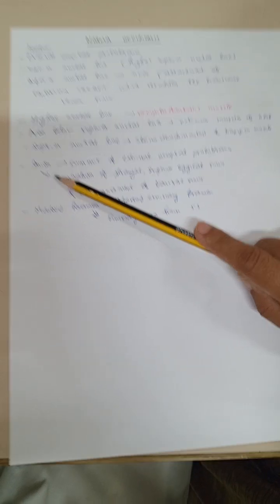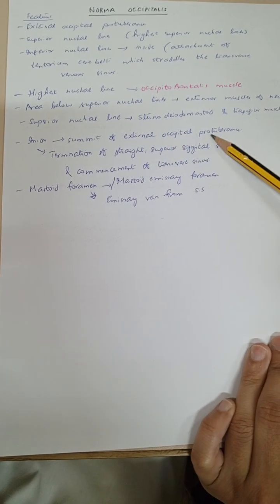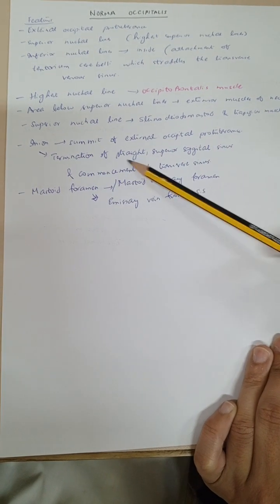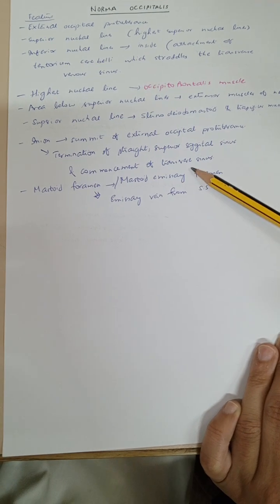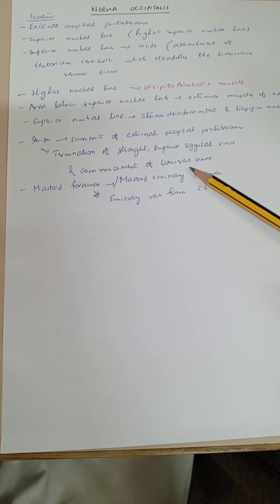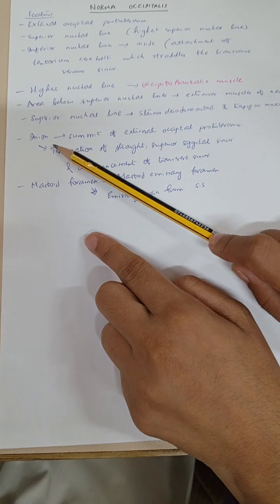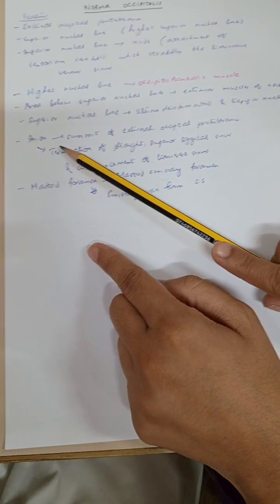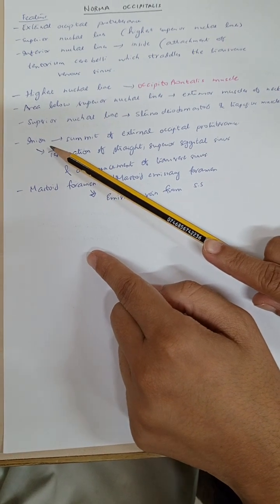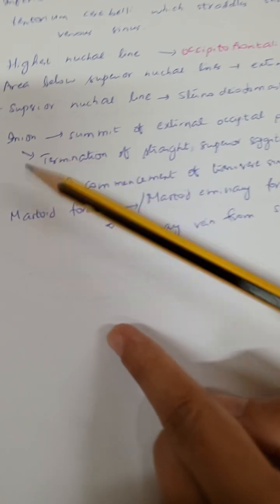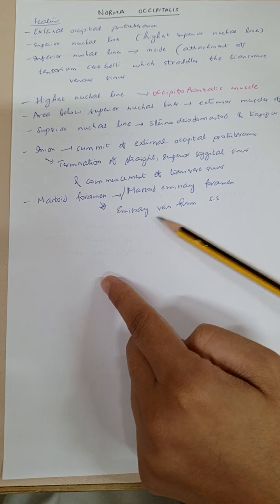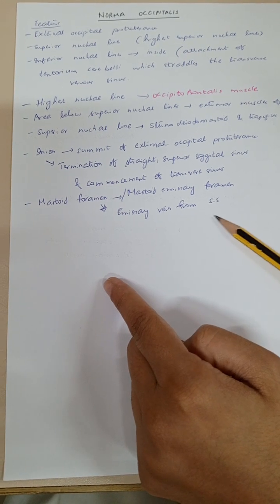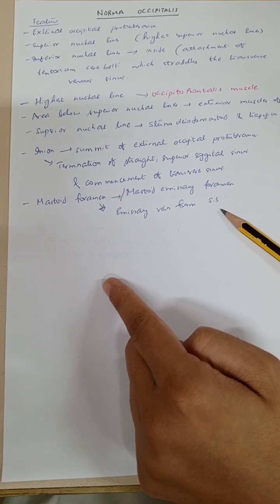On the inion, this is the summit of the external occipital protuberance, and there is termination of the straight sinus, superior sagittal sinus, and commencement of the transverse sinus. This point is important from the orthometric point of view. There is also a mastoid foramen, and there is a mastoid emissary foramen from which the emissary vein from the sigmoid sinus passes.